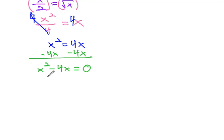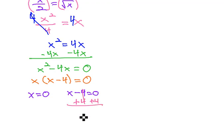And then, we can solve by factoring, by taking out a GCF of x, x times x minus 4 equals 0. Set each factor equal to 0, x equals 0, x minus 4 equals 0. Solve the second by adding 4 to both sides, and we get our second answer of x equals 4.